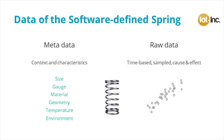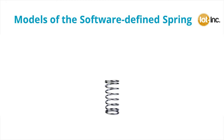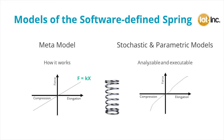The digital twin consists of data and models. The data consists of metadata and raw data. The digital twin's models also consist of two types: metamodels, and stochastic and parametric models.